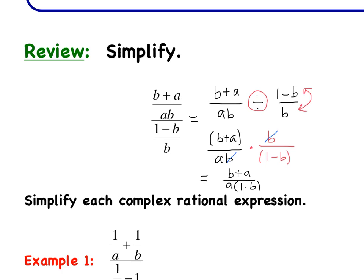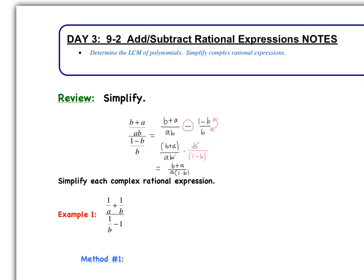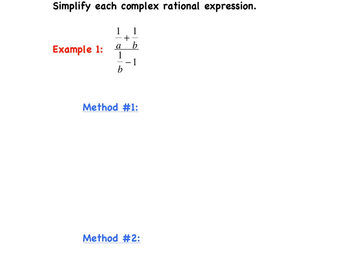So that's just a quick review of the complex fractions we've dealt with. Now let's go into a slightly different type of complex rational expression. There are going to be two methods we can use for simplifying these, and you choose the method that works for you. If you take a look at this example, we have (1 over A plus 1 over B) divided by (1 over B minus 1). It's different this time because we're adding fractions in the numerator and subtracting fractions in the denominator — it's not one fraction divided by another fraction.